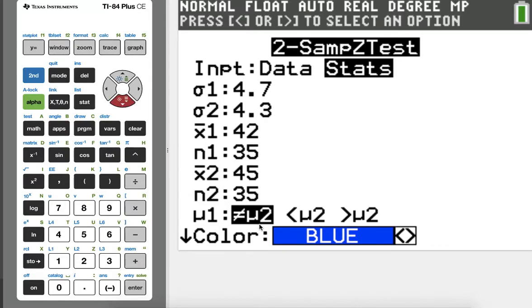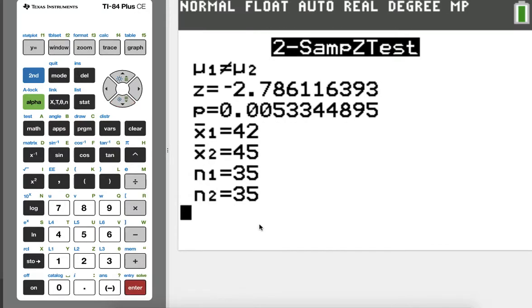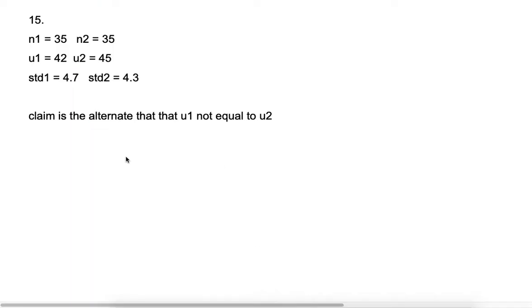Again, we're going to use a not equal to symbol. Hit calculate. We have a very low p-value, which is telling me we're going to reject H0. We're definitely going to reject H0 because our alpha value is 0.1. So we have a p-value that was less than 0.01.